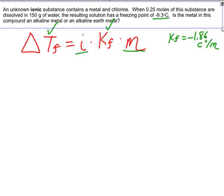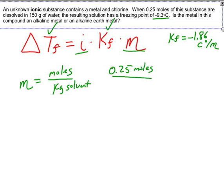We know that molality is the moles of solute over the kilograms of solvent, and in this case we were told right off the bat that 0.25 moles of the substance were dissolved in a total of 150 grams of water, which is equivalent to 0.15 kilograms of water. And so our concentration then is 1.67 molal. That is our molality for this case. So now we know our molality.